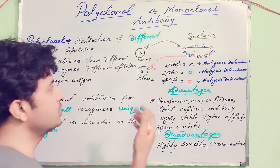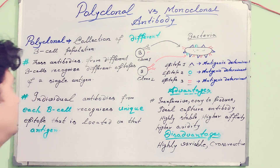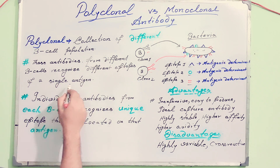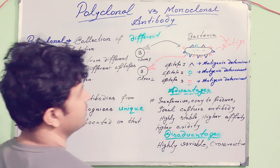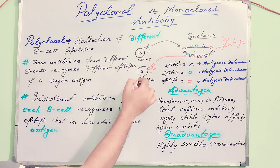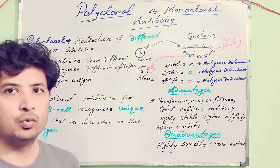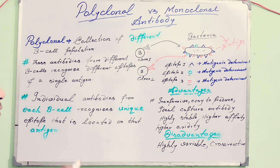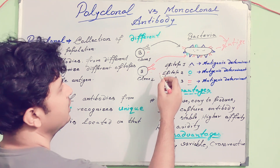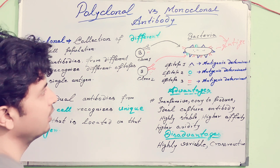Antibodies from different B-cells represent different epitopes of a single antigen. These clones produce antibodies against specific epitopes, but together the B-cell clones — heterogeneous in nature — collectively recognize the particular bacterium. This is called polyclonal antibodies. Each individual antibody from each B-cell recognizes a unique epitope. That is the basic concept of polyclonal antibodies.